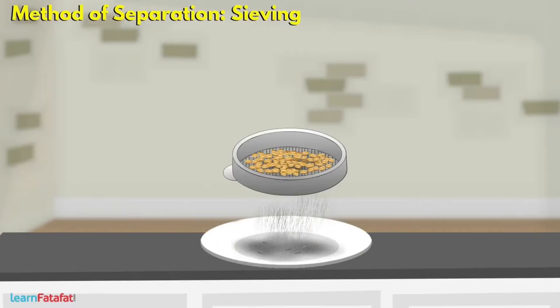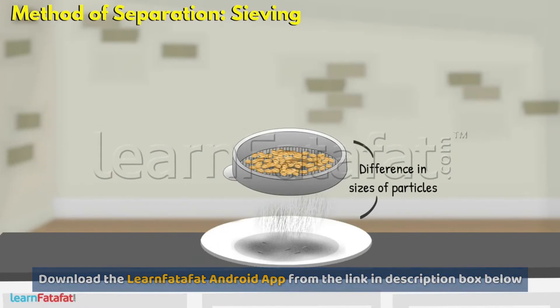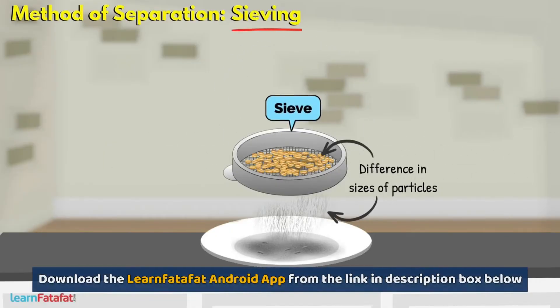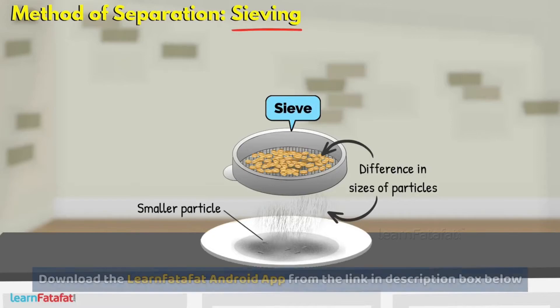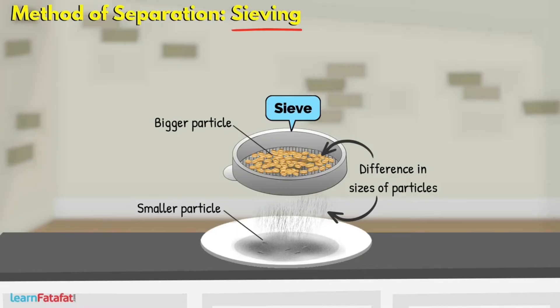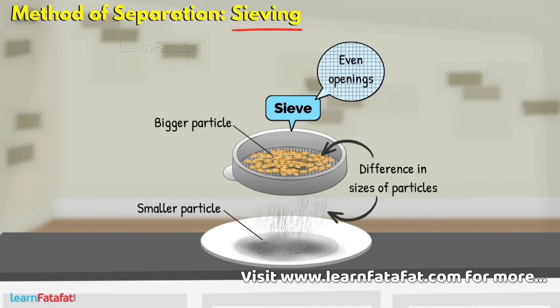This method is useful when there is a difference in size of particles in the mixture. Using a sieve, it is possible to separate smaller particles from bigger particles. A sieve is basically a tool which consists of a mesh of wires forming even openings throughout the area.